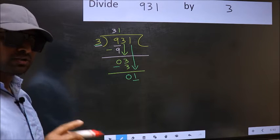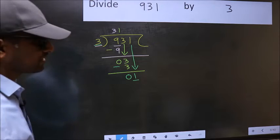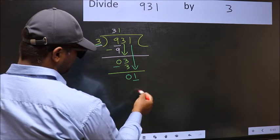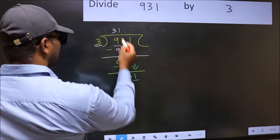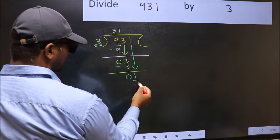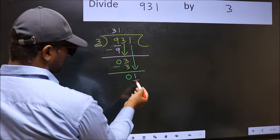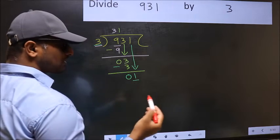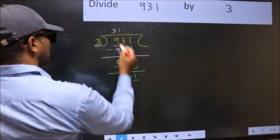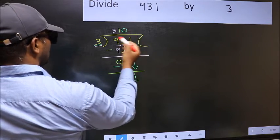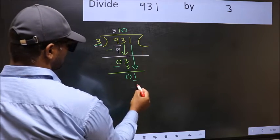Instead, what you should think of doing is, what number should we write here? If I take 1 here, I will get 3. But 3 is larger than 1. So what we should do is take 0. So, 3 into 0, 0.